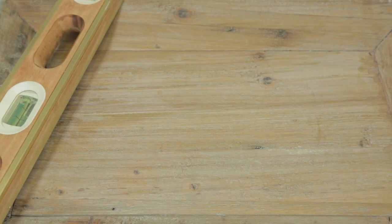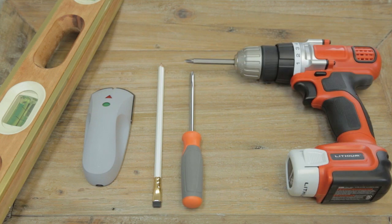Your new Kensington pivot mirror is constructed for easy installation. You will need a level, a stud finder, a pencil, and a Phillips head screwdriver or drill.